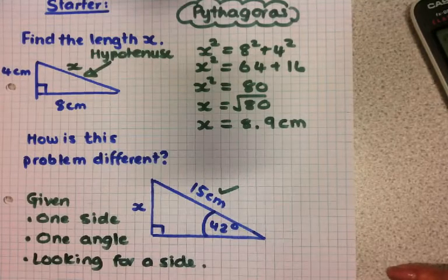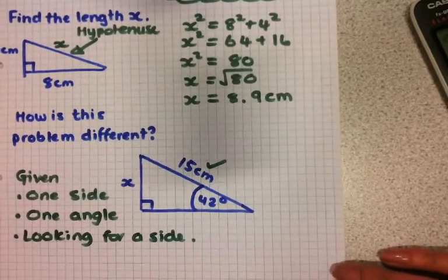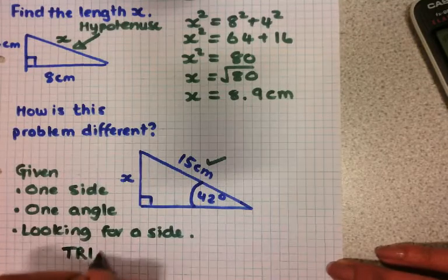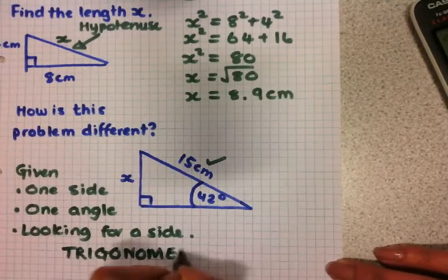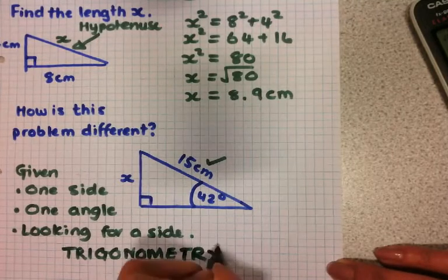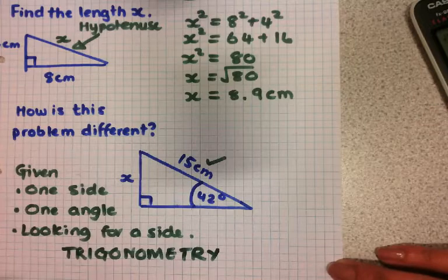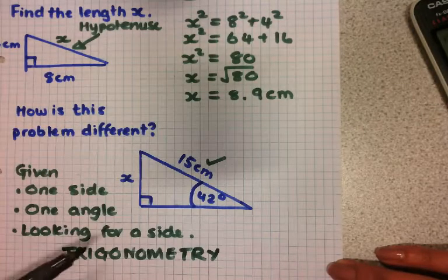So you can almost see as the angle gets involved here. And for this problem, it's not a Pythagoras problem. This is actually a trigonometry problem. So it is important to notice the difference between when you use Pythagoras and when you use trigonometry.